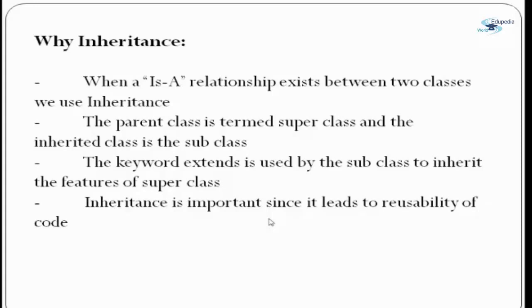Why the need of inheritance? When an IS-A relationship exists between two classes, we use inheritance. For example, salaried employee is an employee, RA employee is an employee. Or you can say dog is an animal, cat is an animal. So animal can be a base class and cat and dog can be subclasses. The common features they share are things like having four legs, two eyes, two ears. Specific to a particular class can be the sounds they make — a dog makes a bark and a cat makes a meow. These are specific to the classes, but there are common attributes that can be inherited by cat and dog.